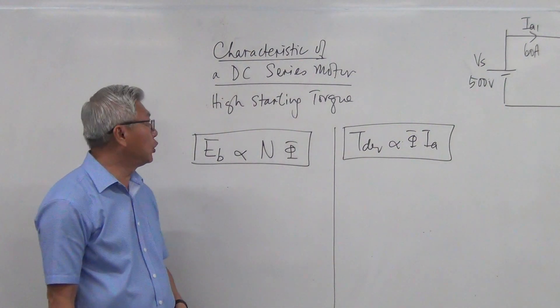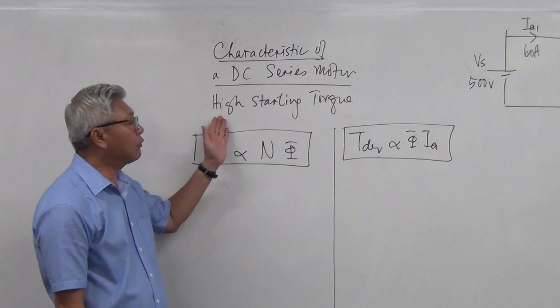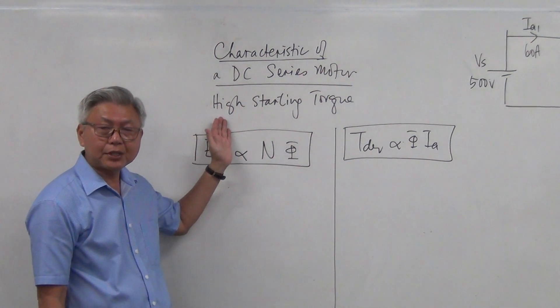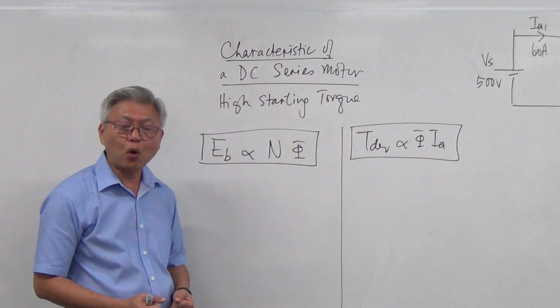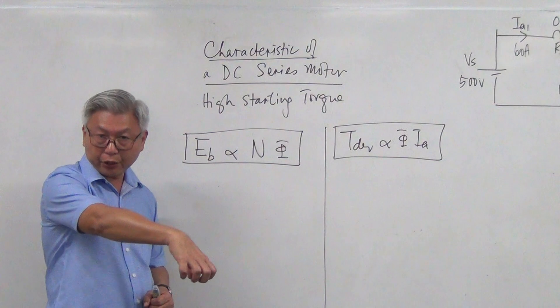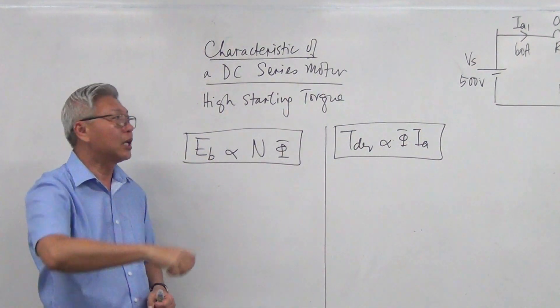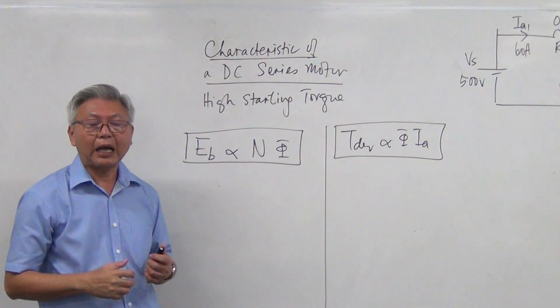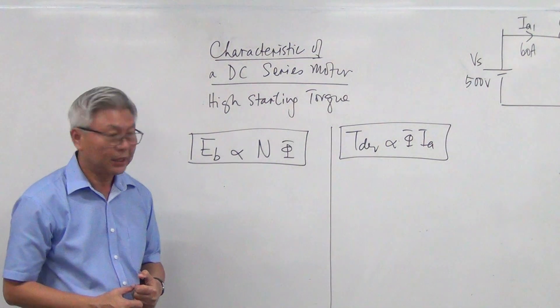Welcome back. We will now continue with the characteristics of a DC series motor. Now DC series motor's main characteristic is that it has high starting torque, and because it has high starting torque, it's very suitable for applications such as cranes where you need to lift up heavy objects at the beginning and then it will slow down. Things like this, high starting torque, DC series motor is very suitable.